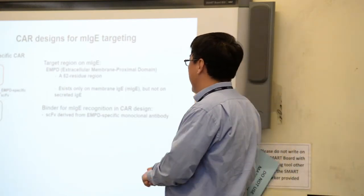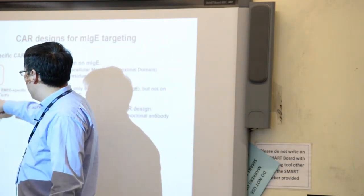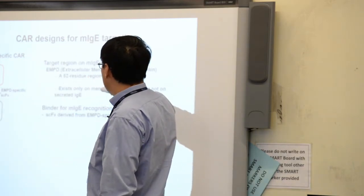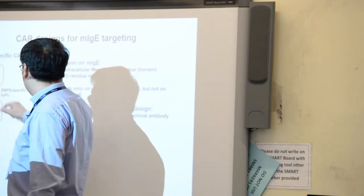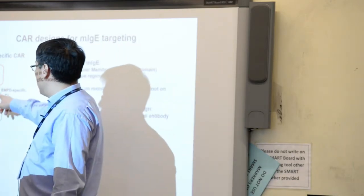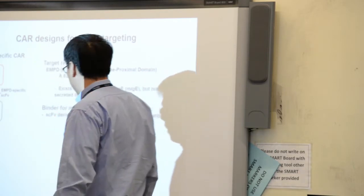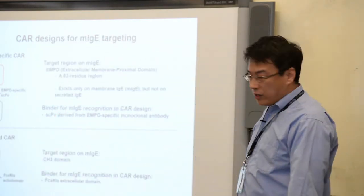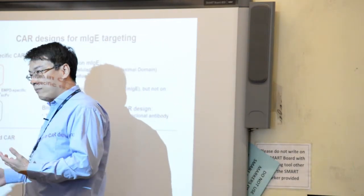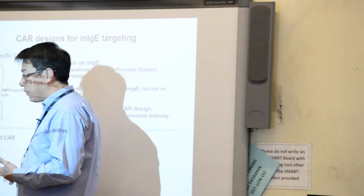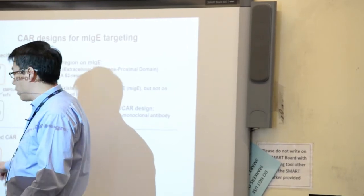For that purpose, we have two strategies for CAR design. The first CAR recognizes a region called EMPD or extracellular membrane proximal domain. It exists only on membrane IgE, not on the secreted form. To recognize it, we're going to use the variable regions from a monoclonal antibody that is specific for this domain. The second strategy is to use the natural receptor of the IgE to recognize it. Here we're going to use the alpha domain of the receptor 1, use that extracellular domain and link it with the intracellular signaling components.